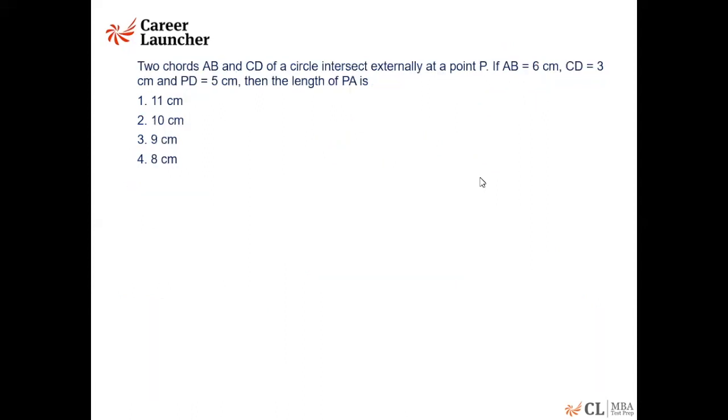Two chords AB and CD of a circle intersect externally at a point P. So let me take, so this is circle A, B, let's say this is point P, and say this is C, D, and this is point P. CD is given as 3 and PD is given as 5 and AB is given as 6. So we have to find out the length PA. So let me assume PB is equal to X.